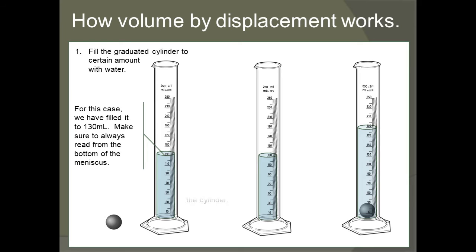The second step is going to be taking our irregular shaped object, in this case a marble, and we're going to gently place it down in the cylinder. Don't drop it in hard because if you do, your water will splash out and you're going to have to start all over from the beginning again.